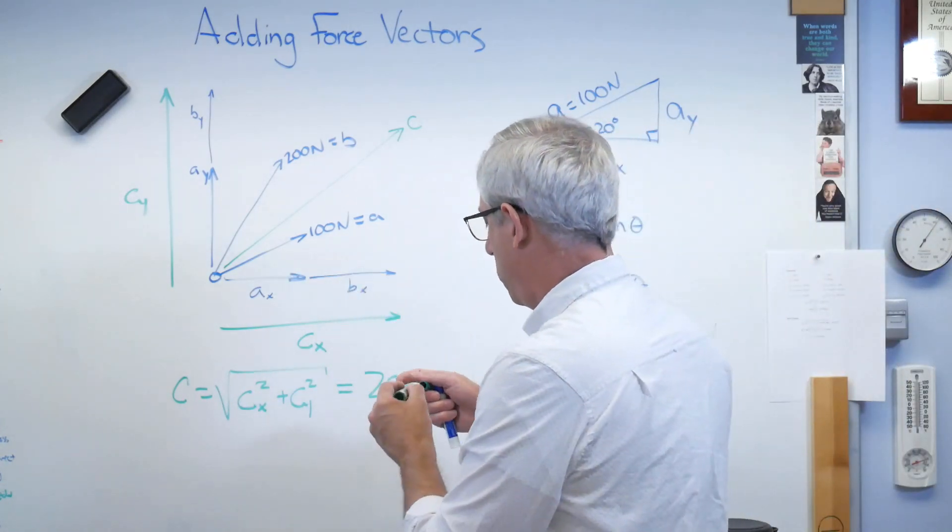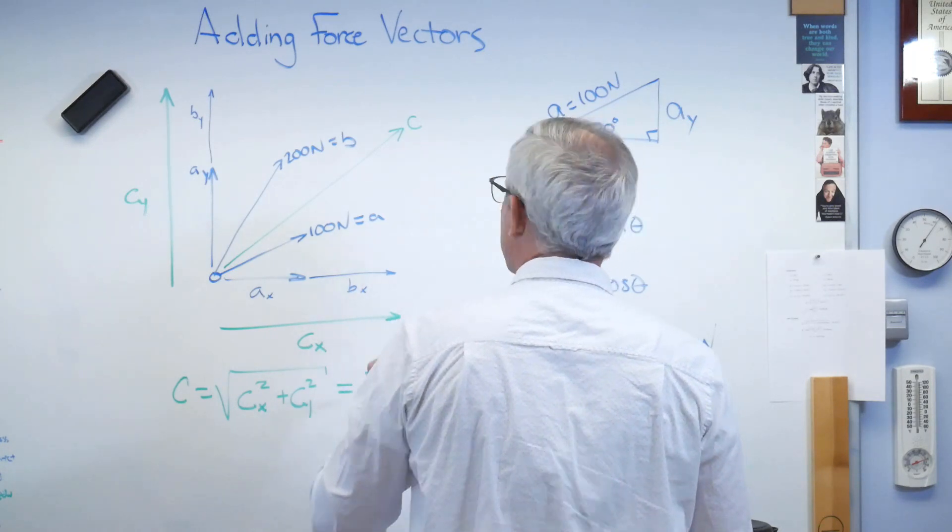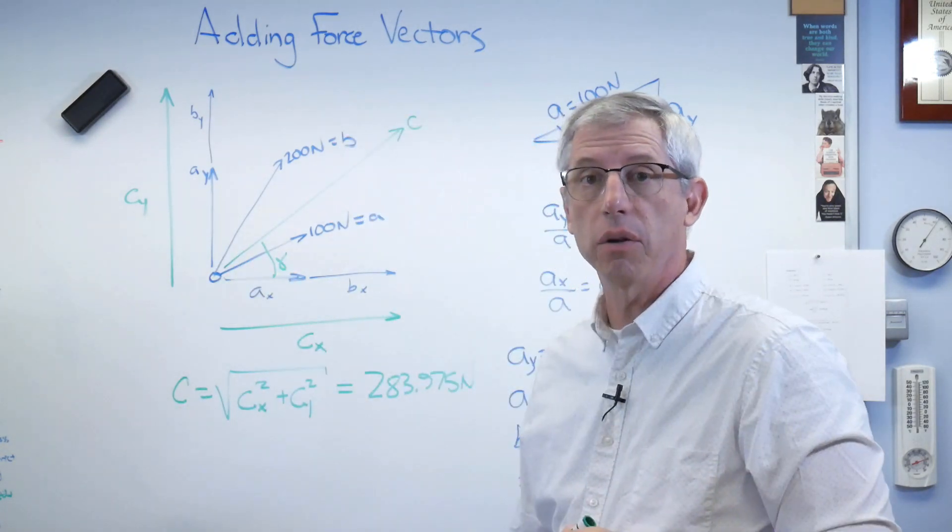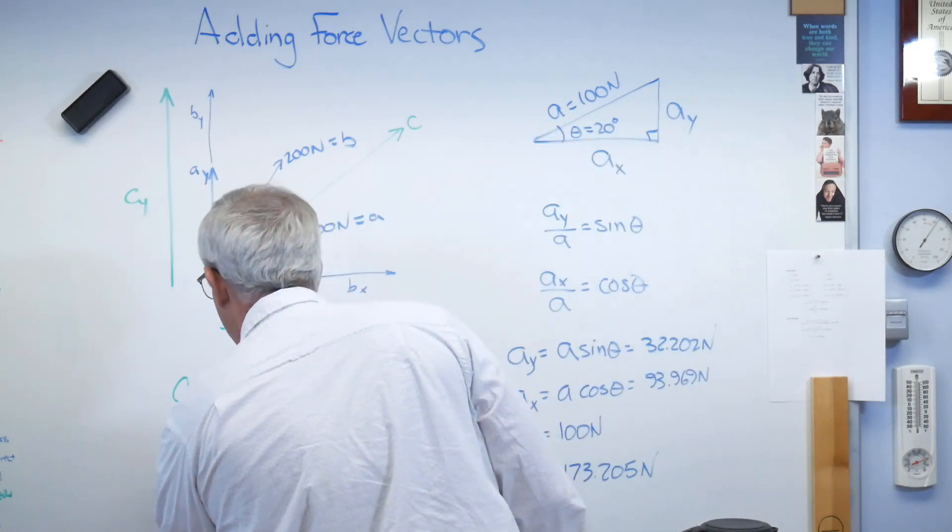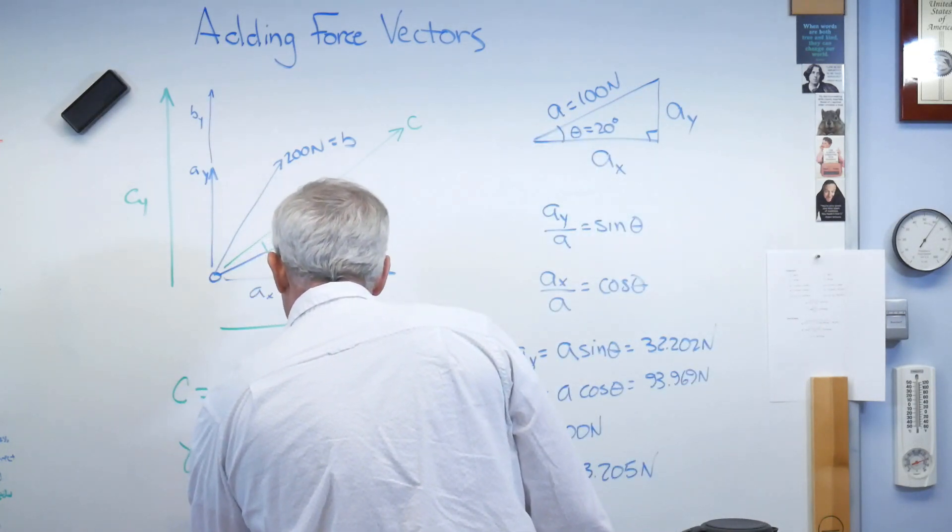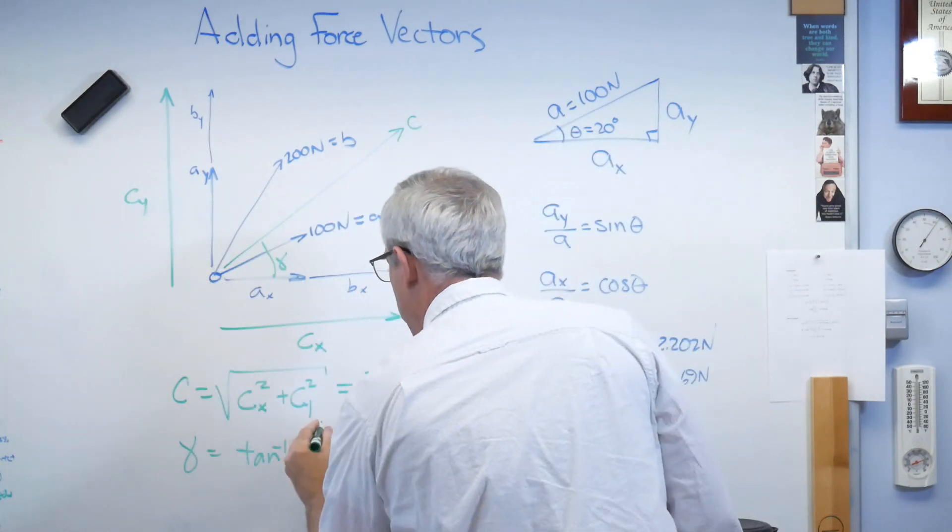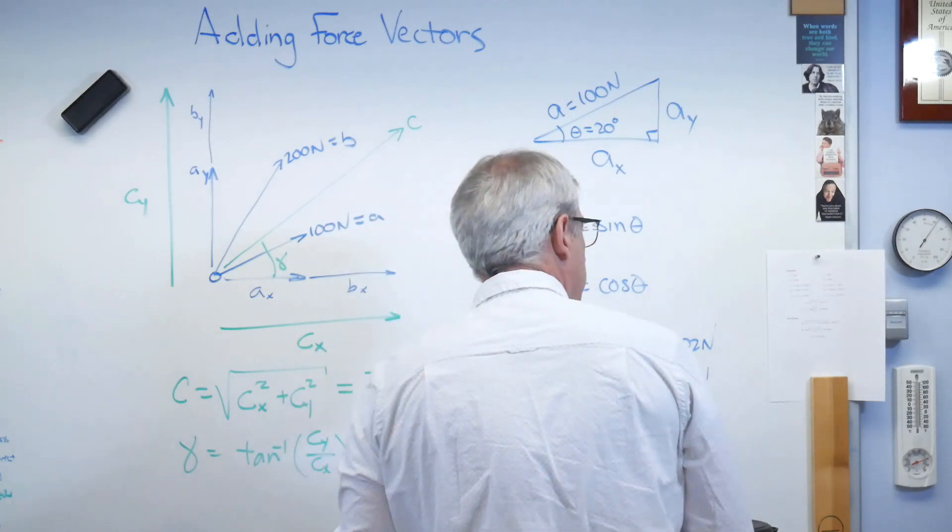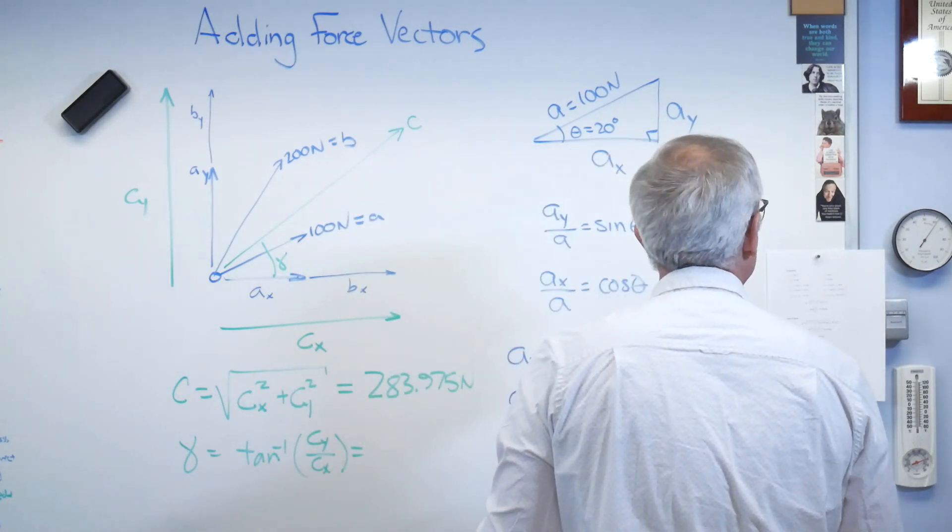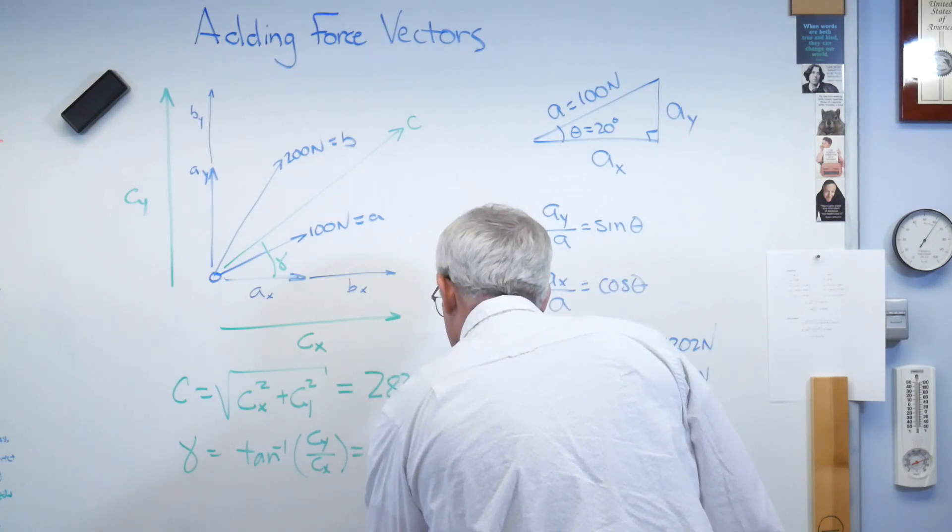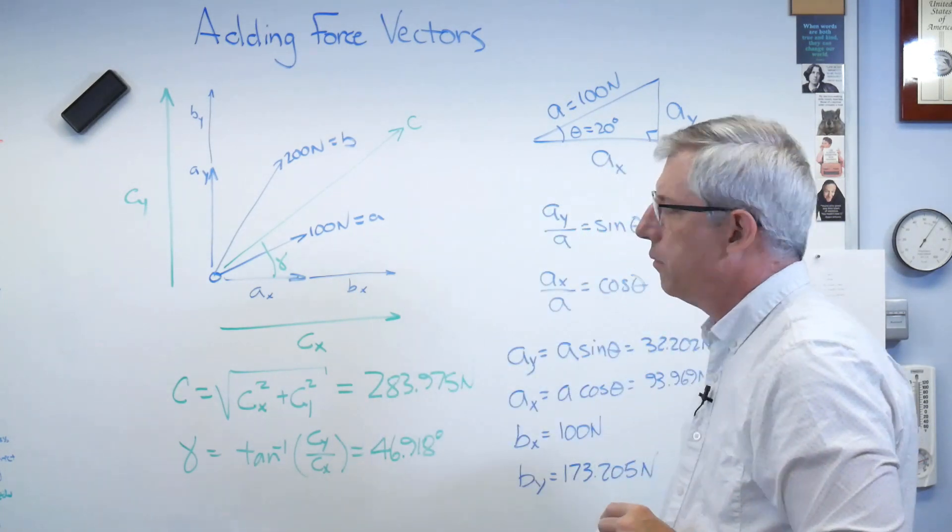Well, if I want to know the direction here, and what did I decide to call that, gamma, I think, on my notes. If the gamma, the angle at which that force is acting. That's just the inverse tangent of Cy over Cx. And if you work that out, you get to be 46.918 degrees. So far, so good.